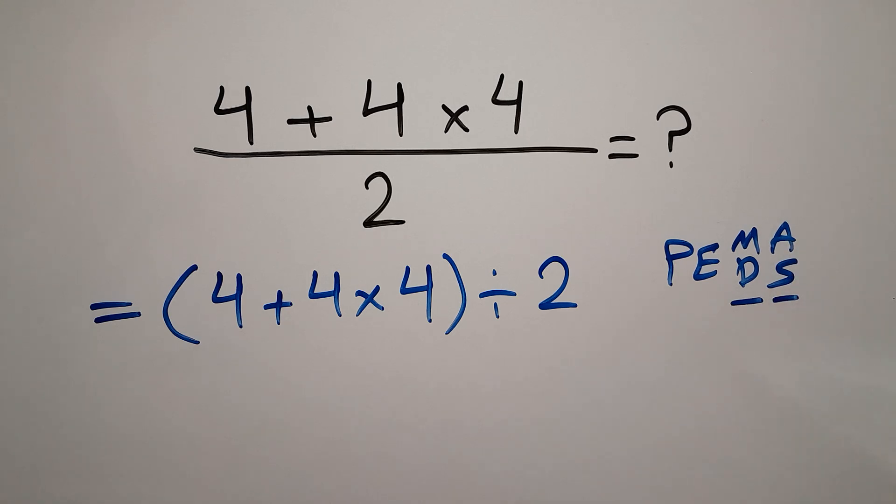In PEMDAS, multiplication comes before addition, so we have to do this multiplication first. 4 times 4 gives us 16.